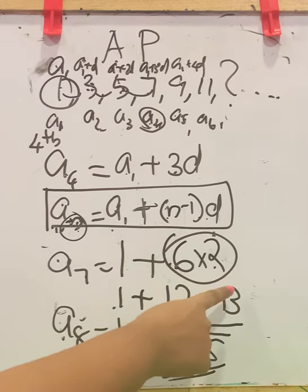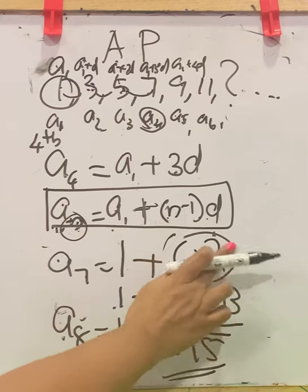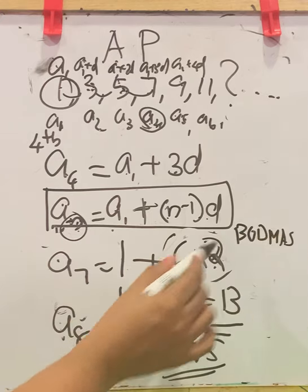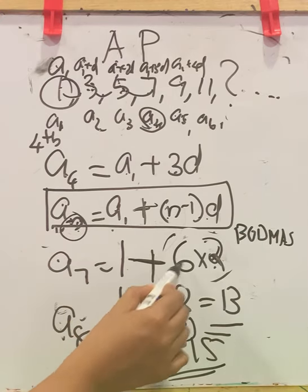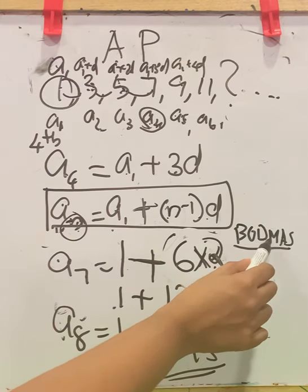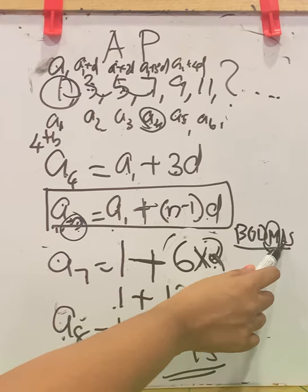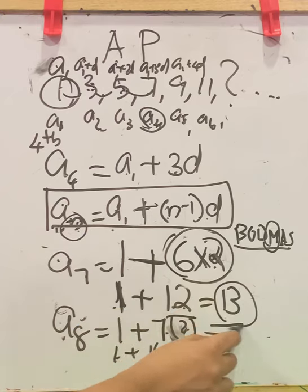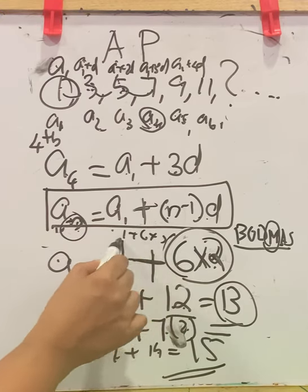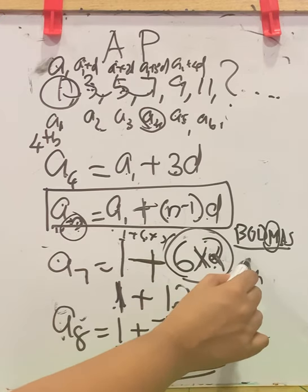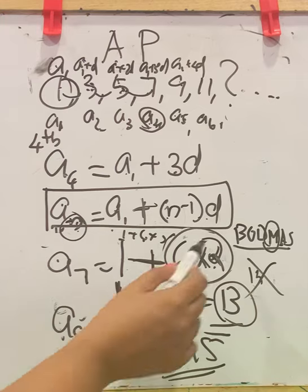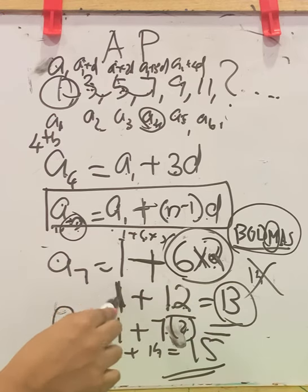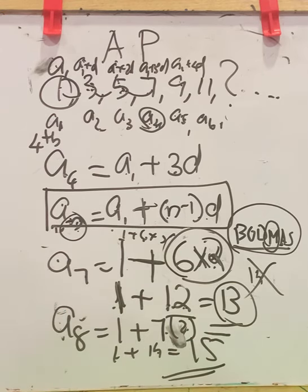Now, when a step looks like A1 plus (N minus 1) times D, you must remember BODMAS. If you have an addition and a multiplication in the same step, multiplication comes first, then addition. For example, 1 plus 6 times 2: first find 6 times 2 equals 12, then add 1 to get 13. If you incorrectly do 1 plus 6 first to get 7 and then multiply by 2, you get 14 — that is the wrong answer. Always apply BODMAS, do multiplication before addition, and you will get the correct term.